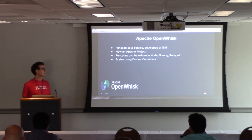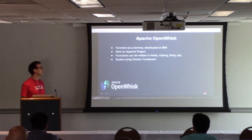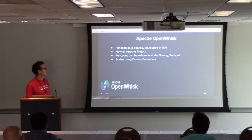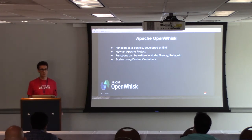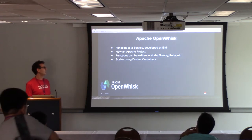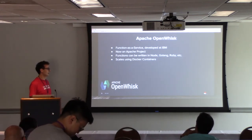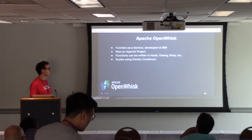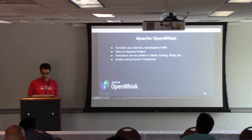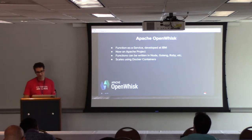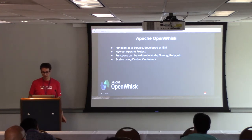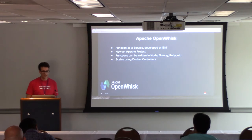Apache OpenWhisk was started by IBM. It implements the Function as a Service infrastructure and is now an Apache open source project. You can write functions in a large number of languages — for example, JavaScript with Node.js, Golang, and Ruby. It scales using container technologies.